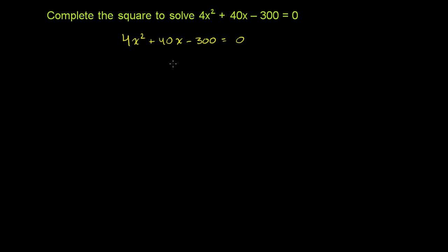So just as a first step here, I don't like having this 4 out front as a coefficient on the x squared term. I'd prefer if that was a 1. So let's just divide both sides of this equation by 4. This divided by 4, this divided by 4, that divided by 4, and the 0 divided by 4, just dividing both sides by 4.